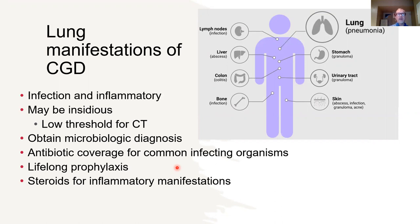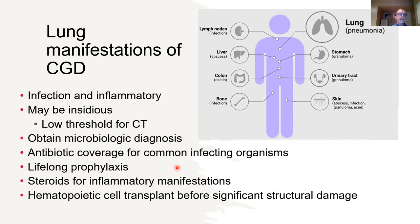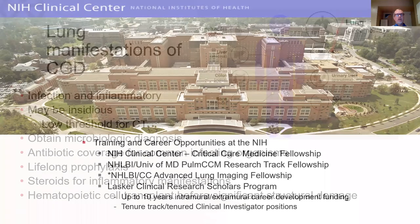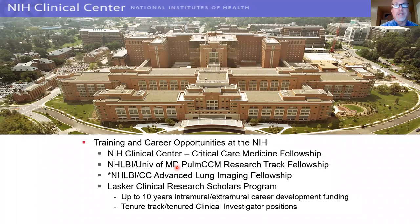Frequently, steroids are used for the inflammatory manifestations of CGD, and in patients with progressive disease, hematopoietic stem cell transplant before significant structural lung damage occurs may be very beneficial in preserving lung function. I'd like to thank you for your attention, and I look forward to the question and answer part of this session. Thank you very much.